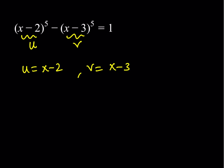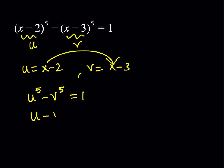But we're going to do this a little differently — that's why I had to use two different variables here. So first of all, obviously from this result, I'm getting u to the fifth power minus v to the fifth power is equal to 1. That's my first equation. My second equation comes from the fact that x minus 2 is 1 greater than x minus 3, so if I subtract u and v, the difference is going to be positive 1.